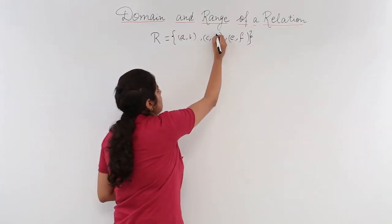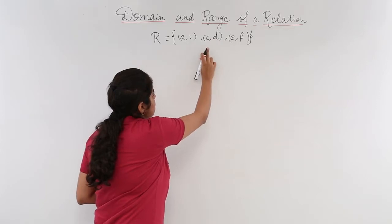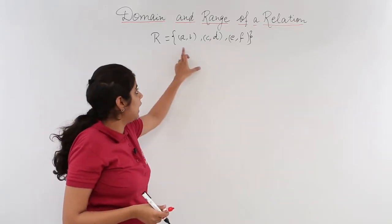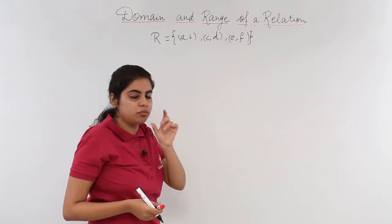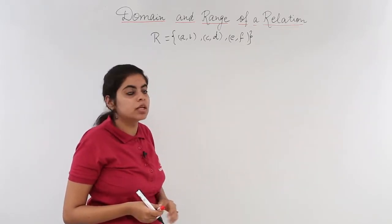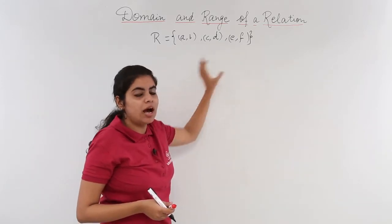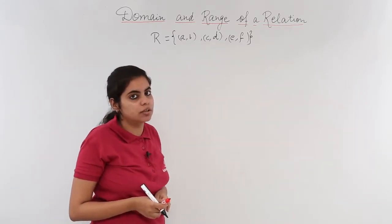Now in this, a, c, e are the initials of one ordered pair and b, d, f are written later in the ordered pair.